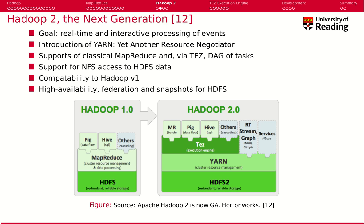In Hadoop 2, the goal was to enable real-time and interactive processing of events. Therefore, they introduced a new component, which is YARN.